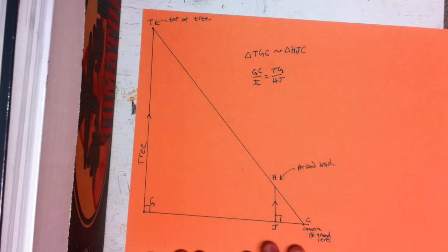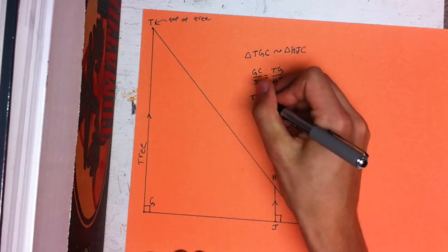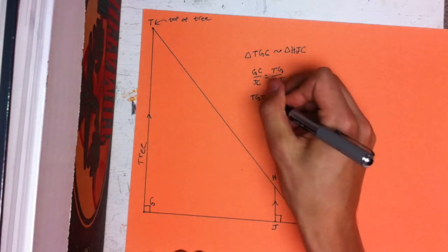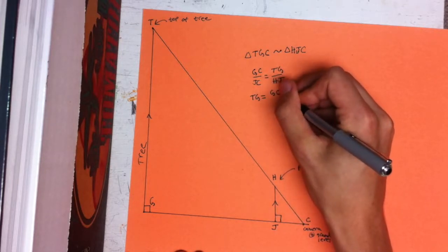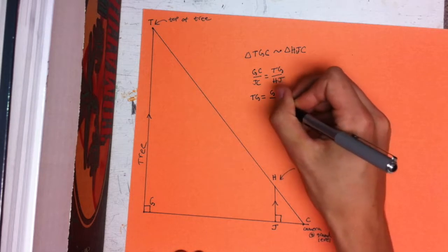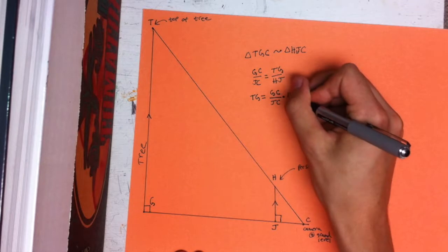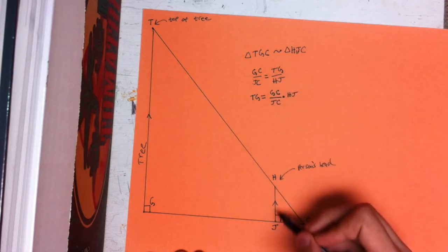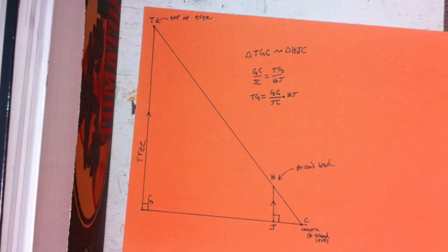Then we're going to just rearrange this for the height of the tree. So the height of the tree to the ground is going to equal the distance from the base of the tree to the camera divided by Jelly Puddle to the camera times the height of Jelly Puddle. So now we're just going to go outside and get our measurements and plug them in and find the height of the tree.